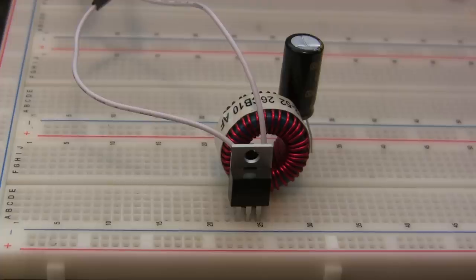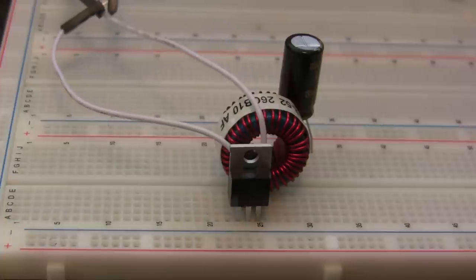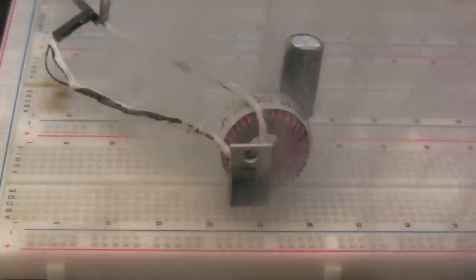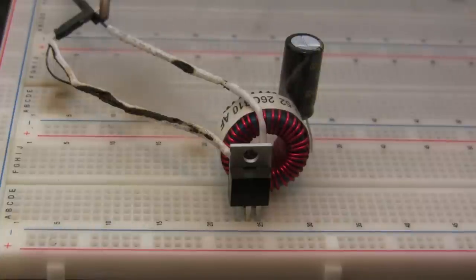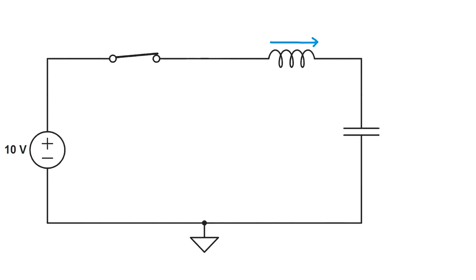Now unfortunately if you build this in real life this will happen. But why? Well, let's say the switch is closed and our power supply is delivering some current. This means that current is flowing through this inductor.